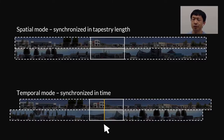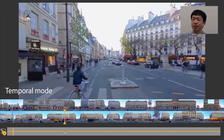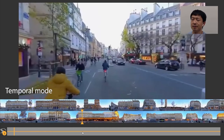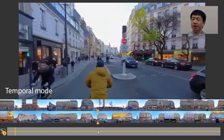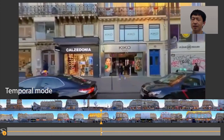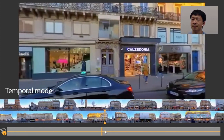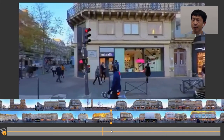A video player using Root Tapestries can operate in both the spatial and the temporal mode. In the spatial mode, the tapestries for the left and right side of the camera path always move at the same pace. In the temporal mode, the two tapestries are always synchronized in video playback time at the cursor position, but they may move at different paces. In the temporal mode, the two tapestries move at different speeds because the scenes on the left and right sides are at different distances from the camera. Also, the tapestries move very slowly when the camera comes to a stop.